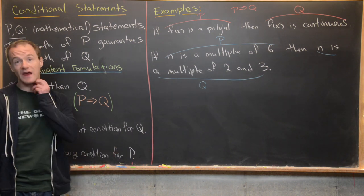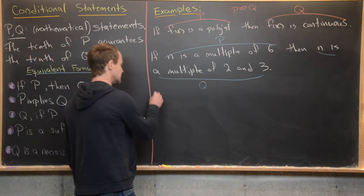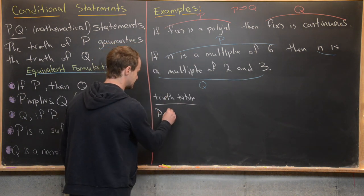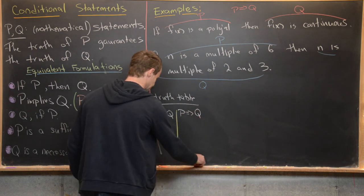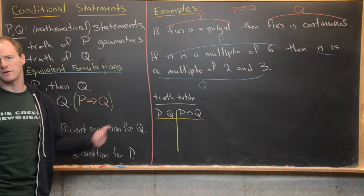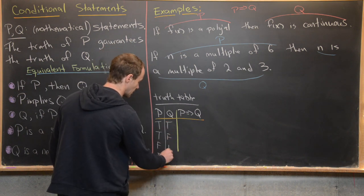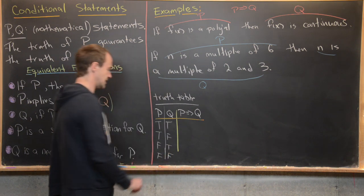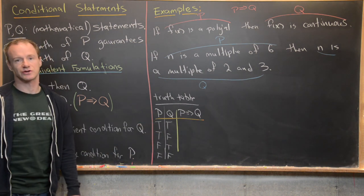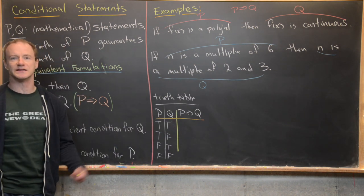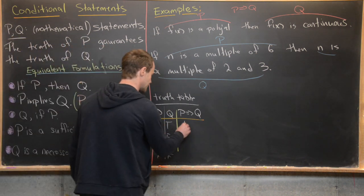Next, let's look at the truth table for a conditional statement, and then talk about the converse. The inputs are P and Q, and the output is P implies Q. P could be true or false, and Q could be true or false — they don't necessarily depend on each other. If P is true and Q is true, then P implies Q is a true statement, because the truth of P implied the truth of Q.